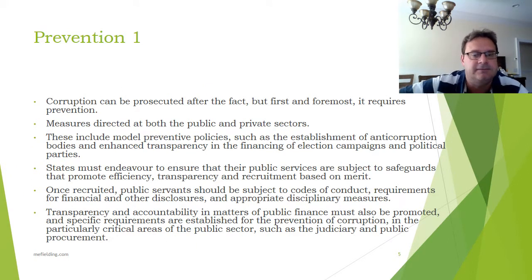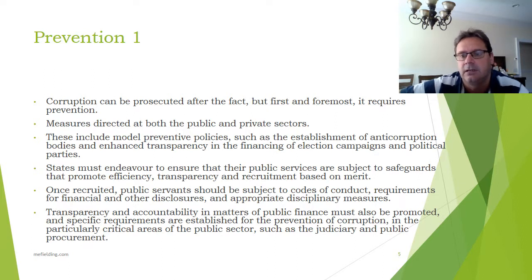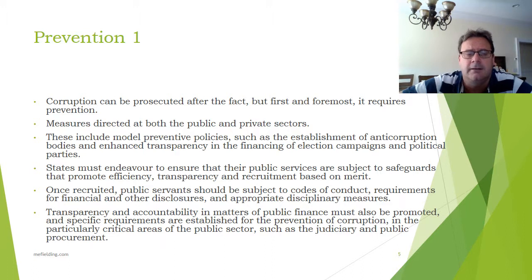Moving on to slide five — the first of two slides on prevention. Corruption can be prosecuted after the fact, but first and foremost it requires prevention. Measures are directed at both the public and private sectors — that's an interesting one. The measures of the convention are directed at both. When you work within governments or individual states, you'll find that the legislation they have tends to work one way or the other. The American government, for example, is absolutely focused on anti-corruption. But outside of the government sector, if it's within the country, there doesn't seem to be as much emphasis.